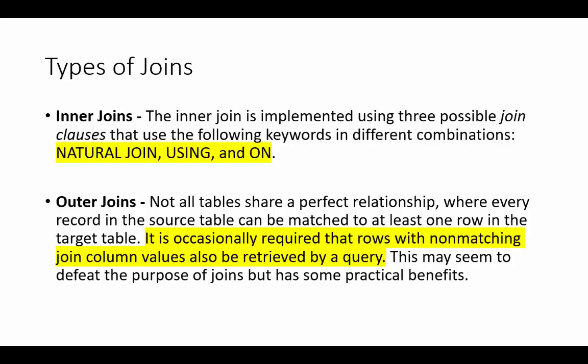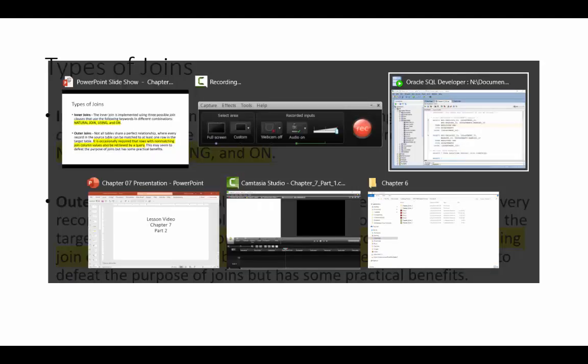You also have outer joins. Sometimes tables do not share a perfect relationship where every record in the source table can be matched to at least one row in the target table. It is occasionally required that rows with non-matching join column values also be retrieved by a query. Let me go to SQL Developer to show you an example.